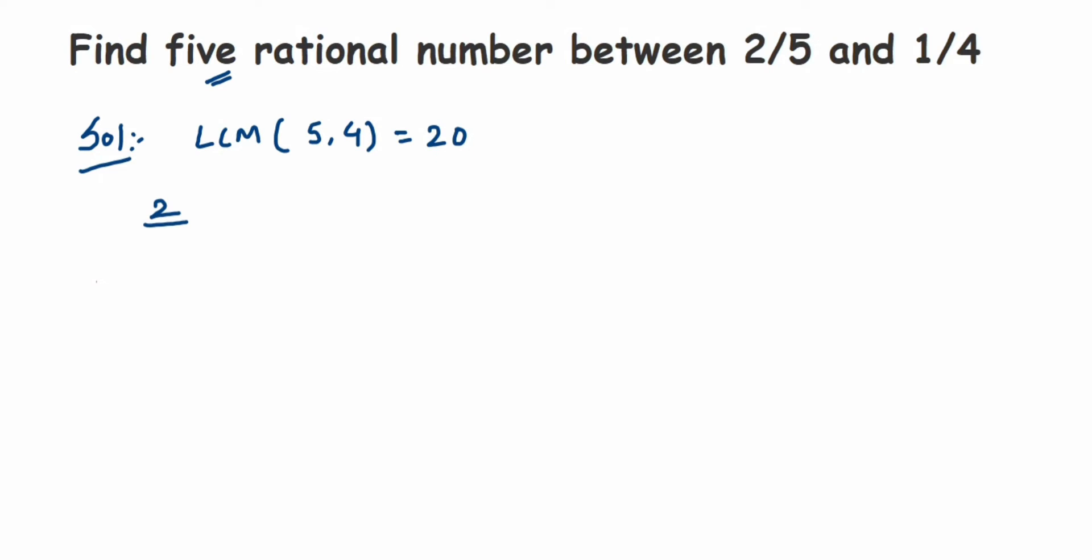It's very simple. So it's 2 by 5, and I want 20 in the denominator. You might have learned how to find out the equivalent rational number—we have to either multiply or divide. Here we have to obviously multiply. With 5, what we should multiply to get 20? It's 4. So multiply the same 4 in the numerator—we'll get 8 by 20.